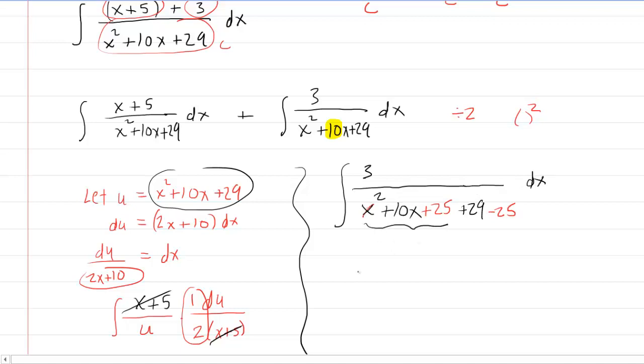And so what happens is this becomes a factorable expression. That is x plus 5 times x plus 5, which can be rewritten as just x plus 5 squared. And then you can combine these, of course, to make plus 4.